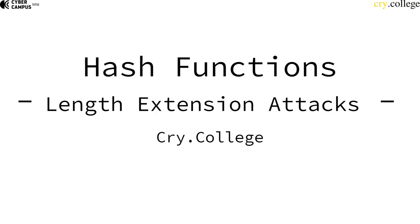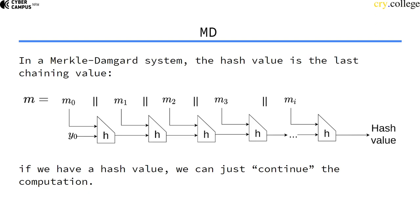As promised, we're going to talk about length extension attacks in the specific case of message authentication codes. If you remember the Merkle-Damgård construction, we have an iterated hash function that repeatedly calls a compression function.